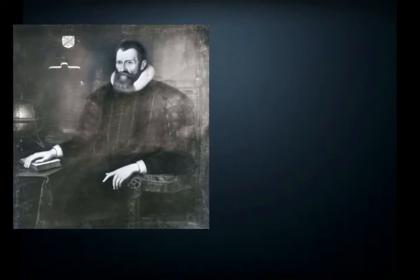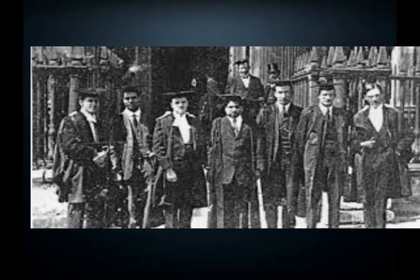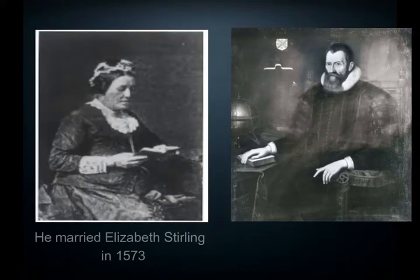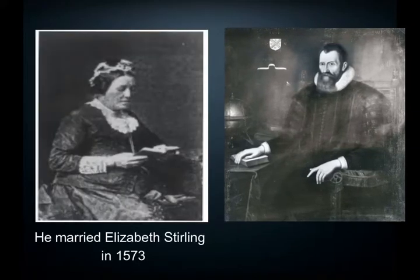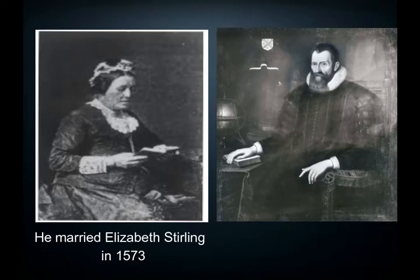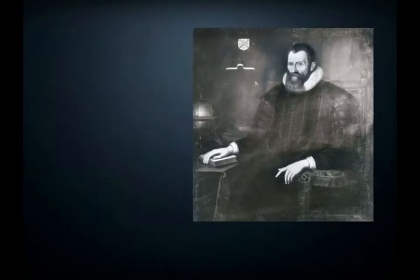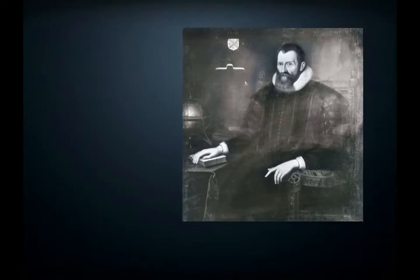There is no record of John graduating, and it is most likely, as was the custom at the time, that John Napier also traveled abroad and studied at universities in France and Italy. Napier returned to his homeland by 1571 and married Elizabeth Sterling in 1573, and the couple had two children together.